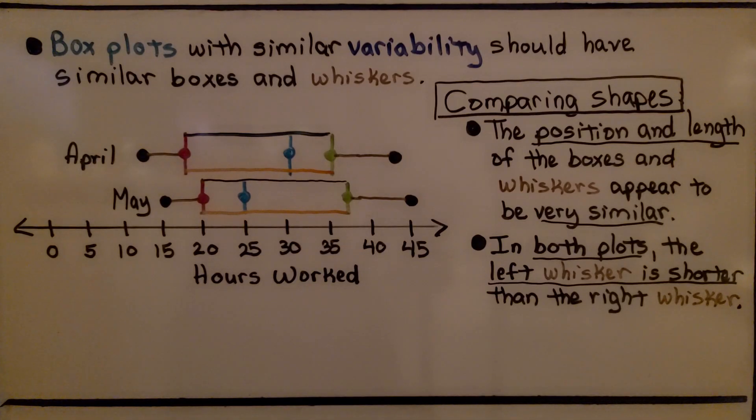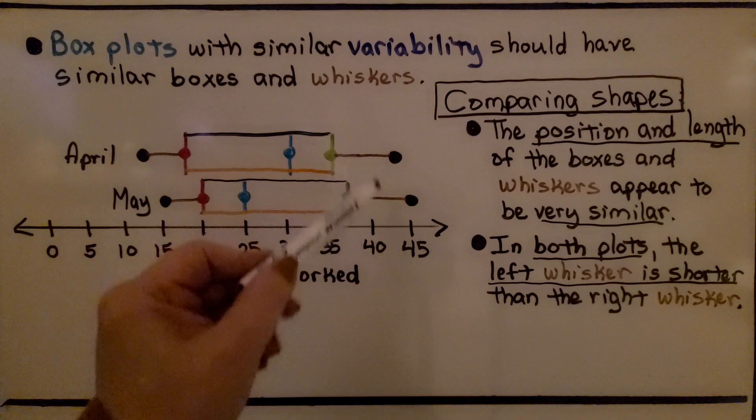Box plots with similar variability should have similar boxes and whiskers. So here we have our box plot of some hours worked in April and May. Comparing their shapes, the position and length of the boxes and whiskers appear to be very similar. In both plots, the left whisker is shorter than the right whiskers.